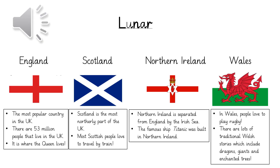The UK is made up of four different countries: England, Scotland, Northern Ireland, and Wales. On this slide there are some facts all about these countries. See if you can find out any more with your adult.